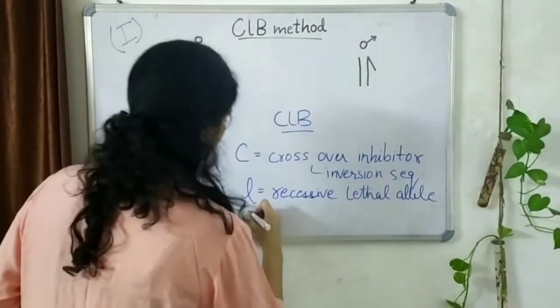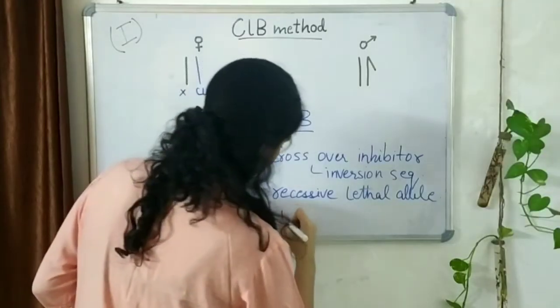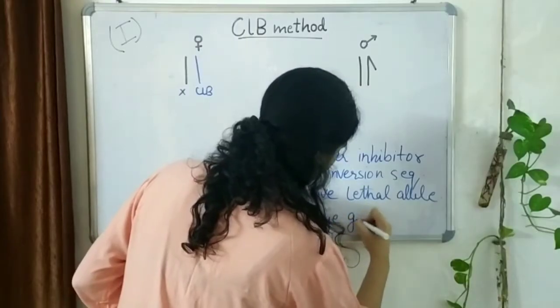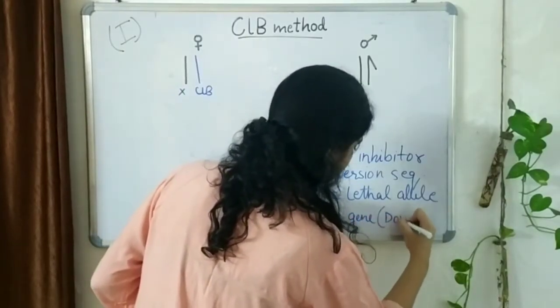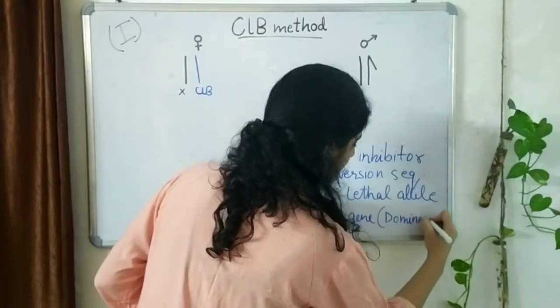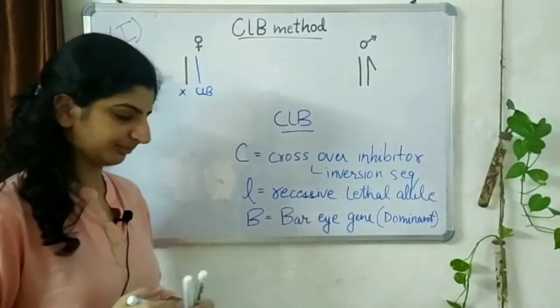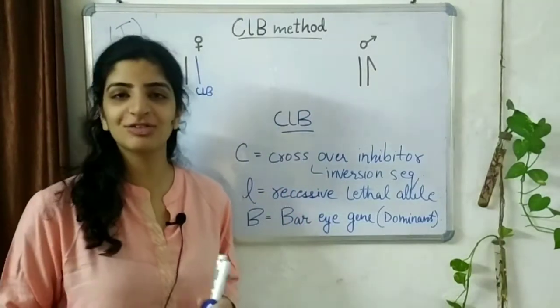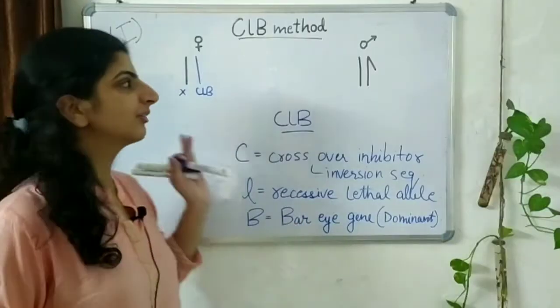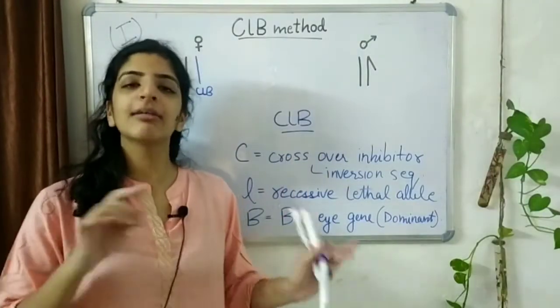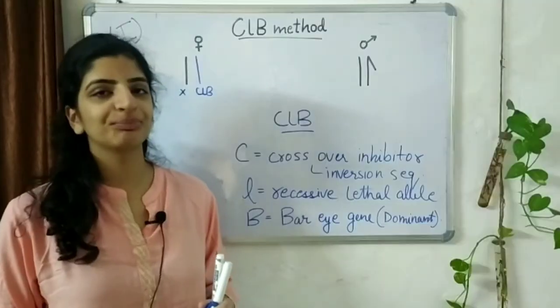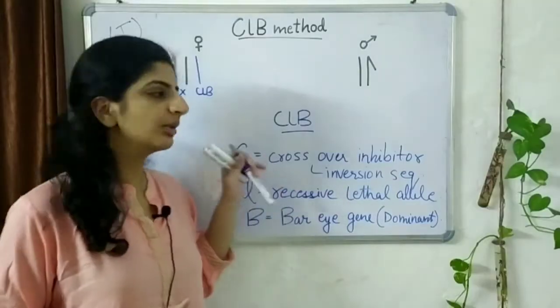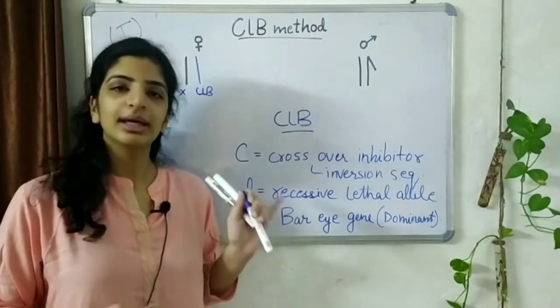And finally, the B is a bar eye gene and this is dominant. The bar eye gene will give us a phenotype, a dominant phenotype that will help us understand that which of the flies have actually received the CLB chromosome. As we move on with the two crosses, you will be able to understand exactly how each of these play a role in our screening process.